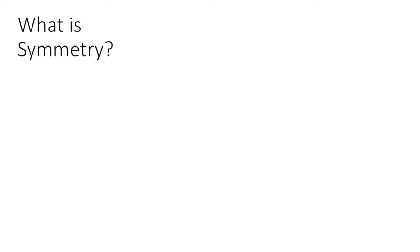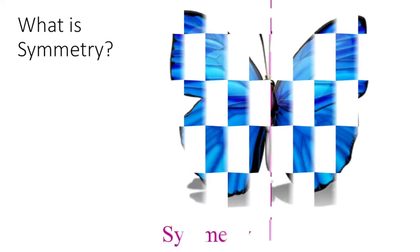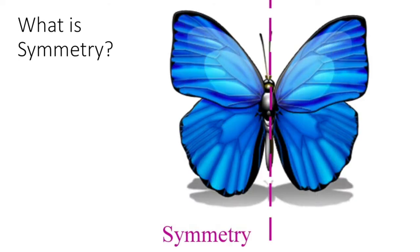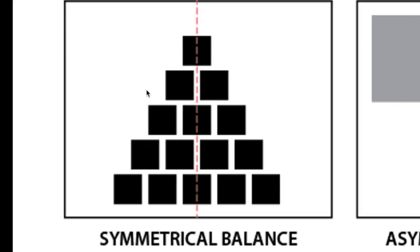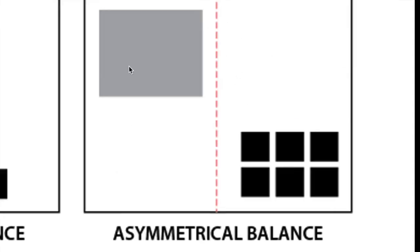What is symmetry? Symmetry is when something is the same on both sides. Like a butterfly — it's the same on one side as the other, with a line of symmetry right down the middle. Now there are two types of balance: symmetrical balance, where things are very equal on both sides, and asymmetrical balance, where it is not equal on both sides but still balances the visual weight in a pleasing way.